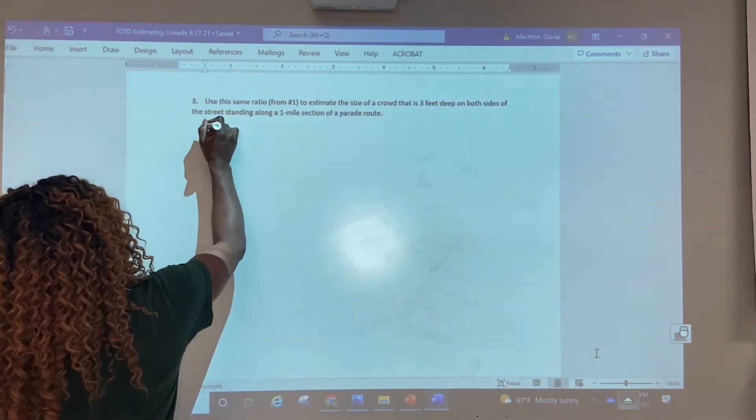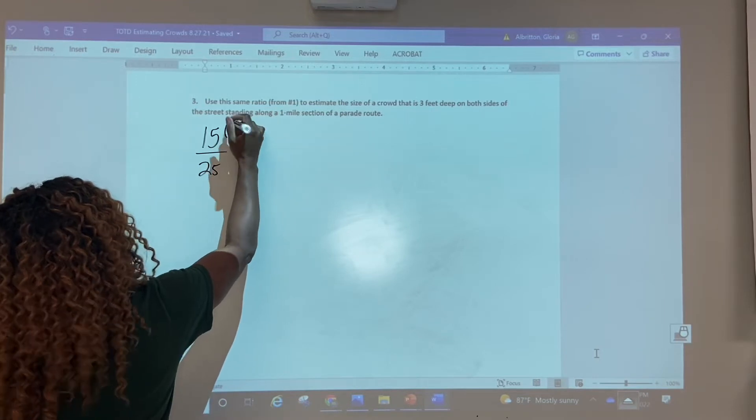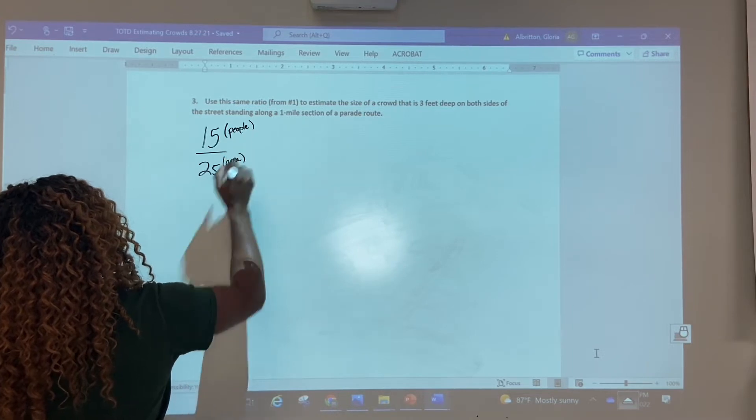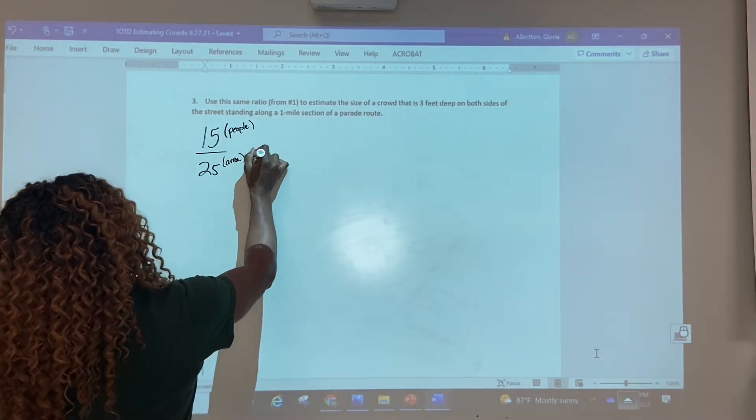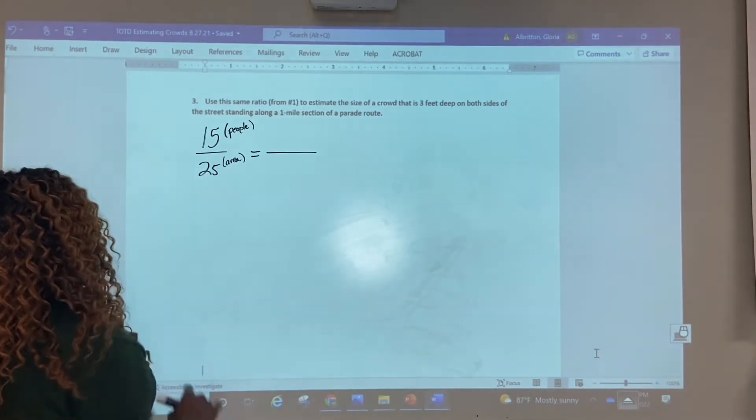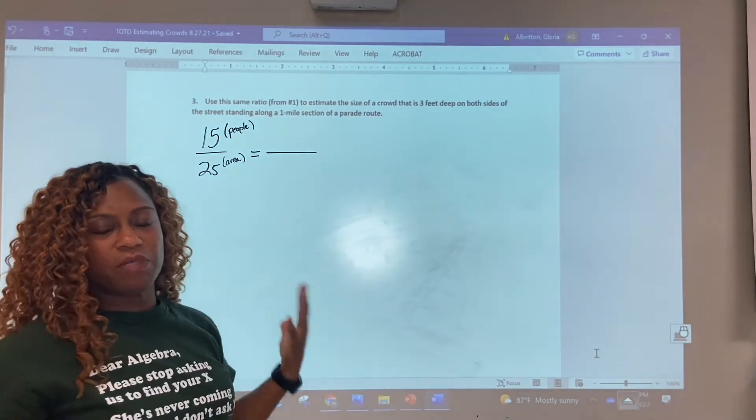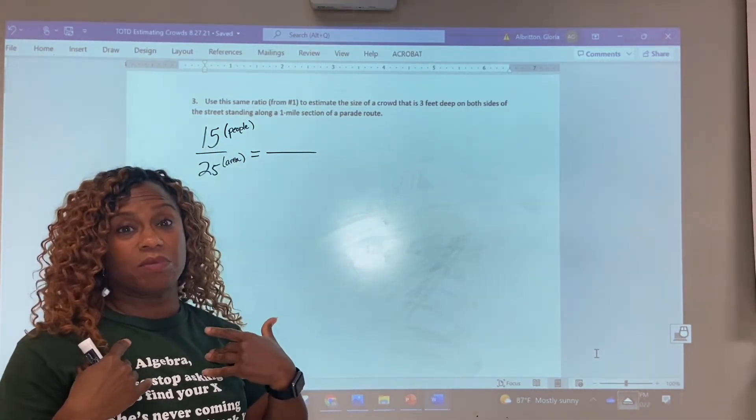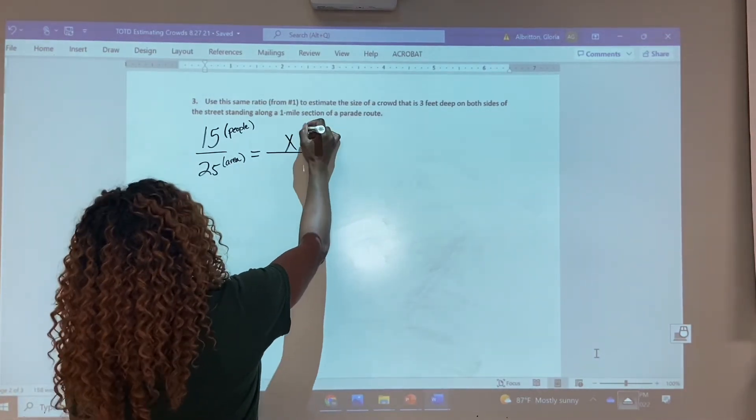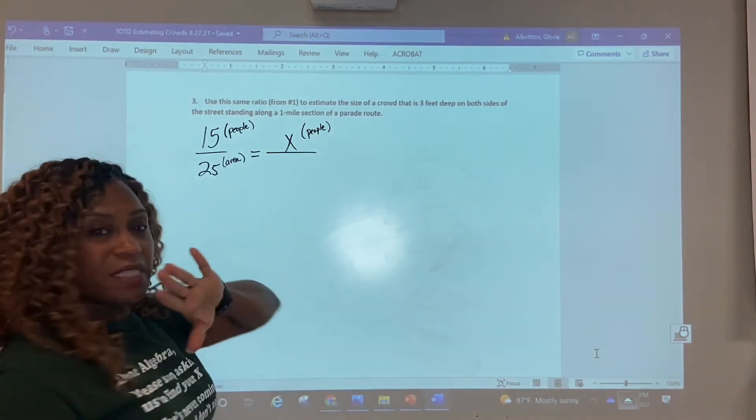Remember the ratio that we had on number one was 15 people will fit inside of a 25 square foot area. And I'm going to continue to remind you that this is talking about the people and this is talking about the area. And we want to keep it consistent here. So whatever goes here has to be people. In fact, we can go ahead and put x there, because again, we're asked to estimate the number of people. That's something that's unknown. So let's go ahead and put we don't know our x value. And here we'll put the area.